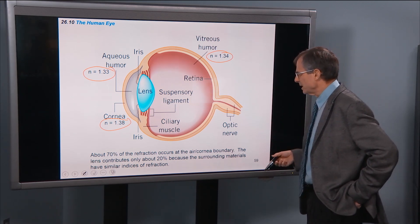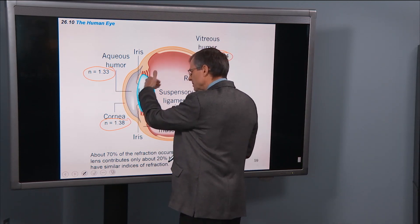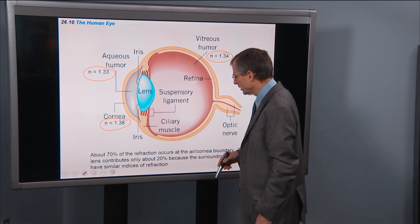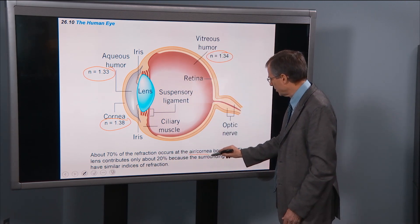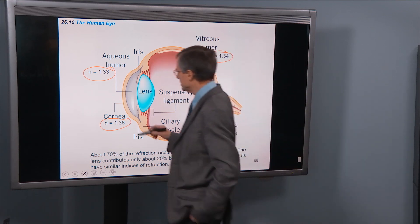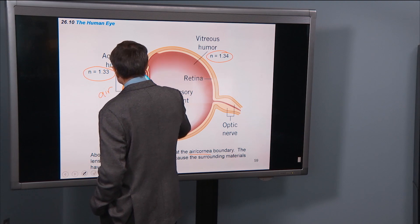About 70% of the refraction, so we have all these optical components that occur. About 70% of the refraction occurs at the air cornea boundary. So it's this boundary right here between the air and the surface of the cornea.